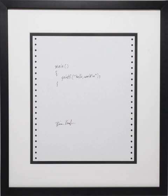The earliest programmable machines preceded the invention of the digital computer. In 1801, Joseph-Marie Jacquard devised a loom that would weave a pattern by following a series of perforated cards. Patterns could be woven and repeated by arranging the cards.